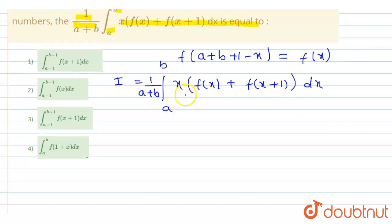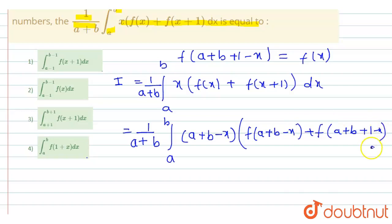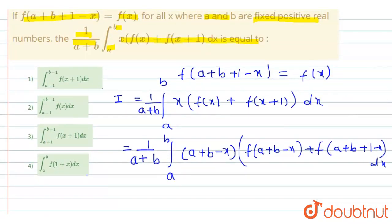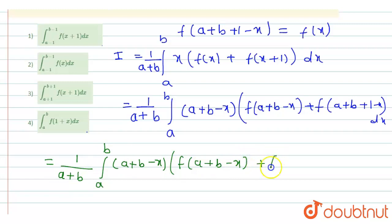There is a property of a definite integral that we can apply: 1/(a+b) · ∫[a to b] with x replaced by (a + b - x), giving (a + b - x)·[f(a + b - x) + f(a + b + 1 - x)] dx. Since f(a + b + 1 - x) = f(x), we substitute that value and obtain the integral 1/(a+b) · ∫[a to b] (a+b-x)·[f(a+b-x) + f(x)] dx.